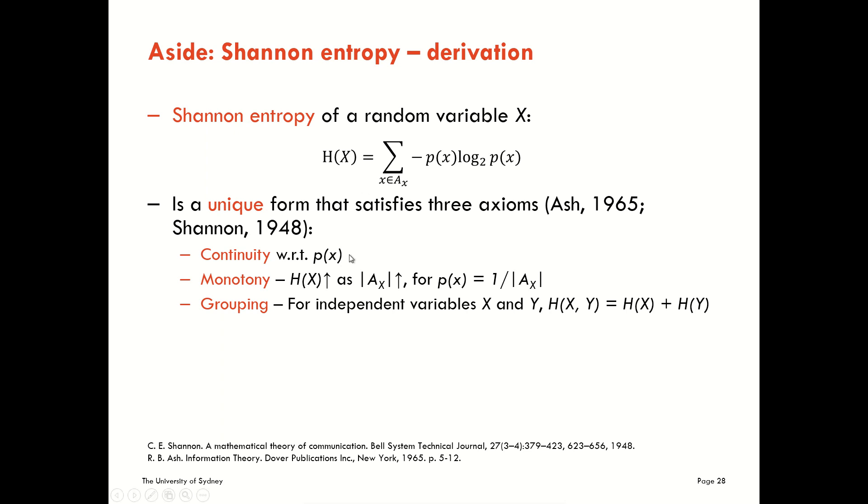They are that the entropy is continuous with respect to small changes in the underlying probability distribution function. Okay, that's really important. We shouldn't see large jumps in the number of bits that we need to include, discontinuous jumps in the number of bits that we need to encode our variable if there are small changes in the probability distribution function. What we also have is that the average Shannon entropy monotonically increases as the alphabet size increases if we have equiprobable symbols across that alphabet.